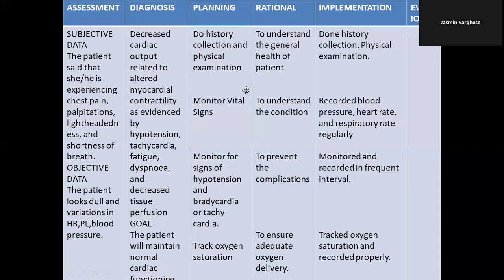The goal is written in future tense — for example, 'the patient will maintain normal cardiac functioning or cardiac output.' Planning is always written in present tense because you are planning it now. Rationale you can start with two points. Implementation is written in past tense because it has already been done. Evaluation is where you write the results.